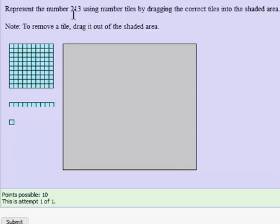In this problem, we are to represent the number 213 using number tiles by dragging them into the shaded area. Let's start by noticing that the number 3 is in the units place, and a unit will be represented by a little blue square shown here.